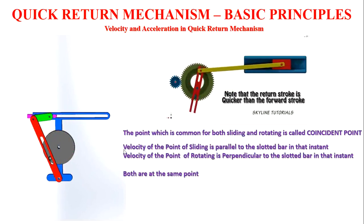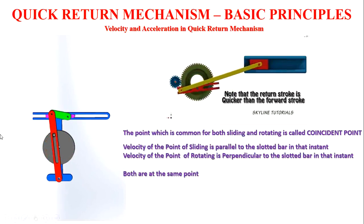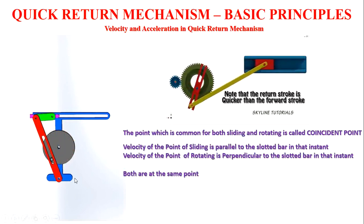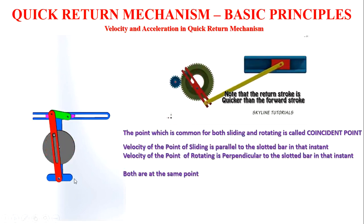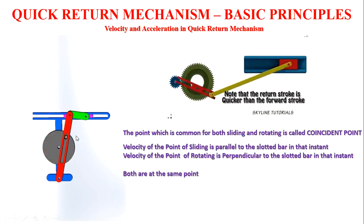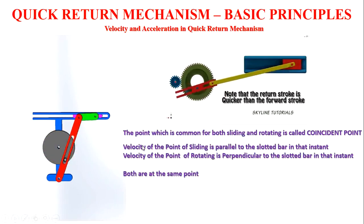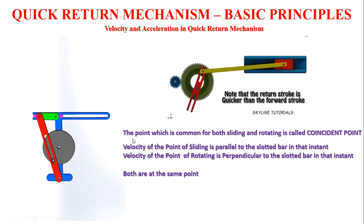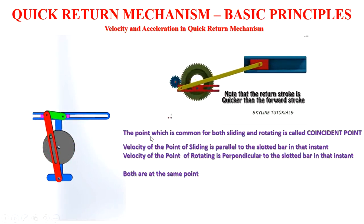The velocity of the coincident point along the slotted bar is parallel to the slotted bar, because the sliding velocity is parallel. The velocity of the point in the crank is perpendicular, because the velocity of a rotating element is perpendicular to the slotted bar.